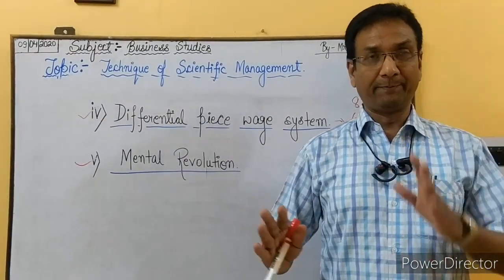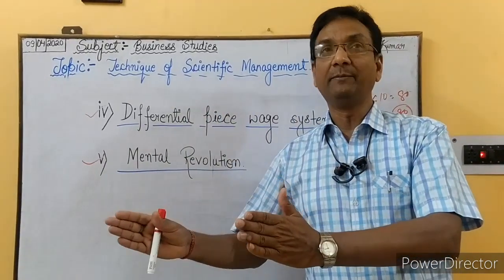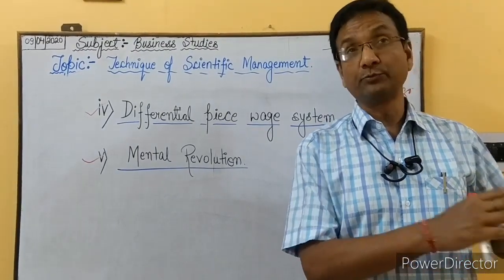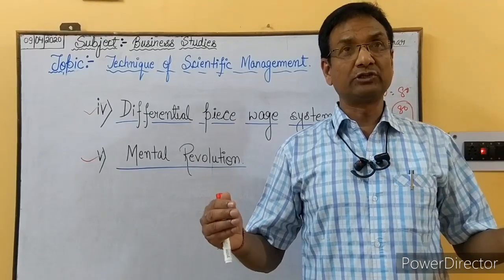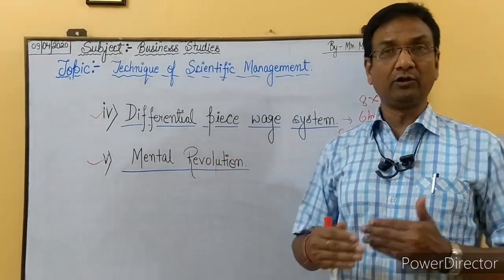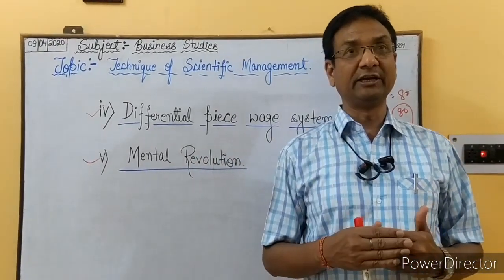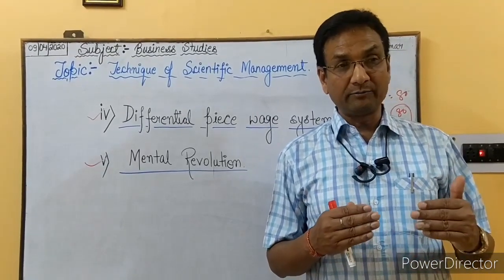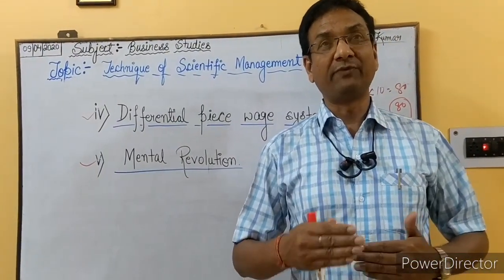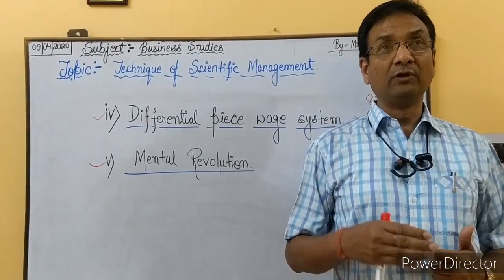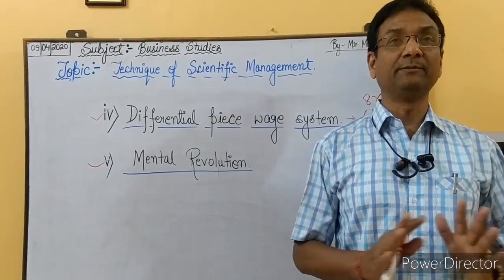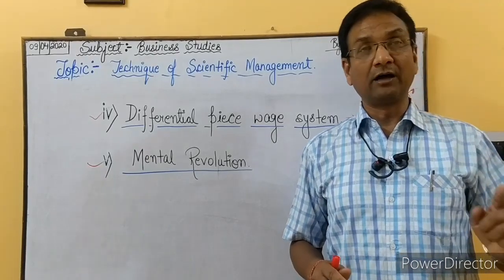The worker should be told how much work has been done and what the profit is. If there is profit, the workers need to share in that benefit. There should not be a communication gap between workers and employers. Taylor said that with mental revolution, trade unions would not need to cause conflict, and employers and workers could work together cooperatively.